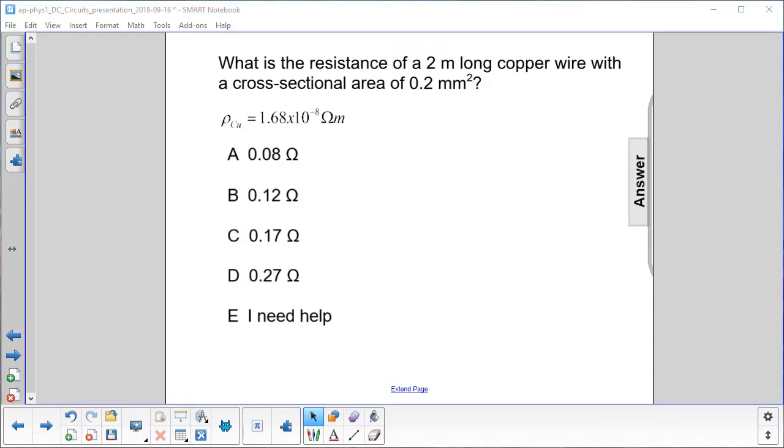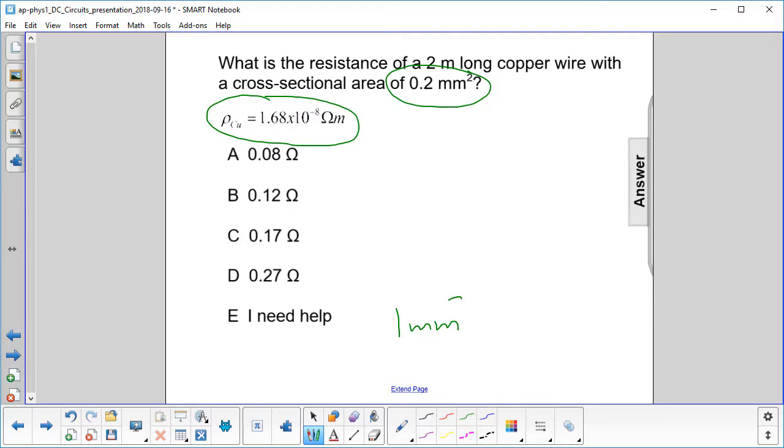What is the resistance of a 2 meter long copper wire with a cross-sectional area of 0.2 millimeters squared? They give us the resistivity of copper right here. This area, we're going to have to convert that to square meters. So 1 square millimeter is equal to 10 to the minus sixth square meters.